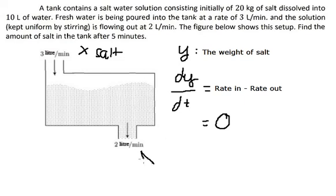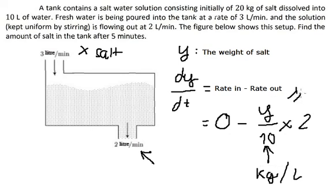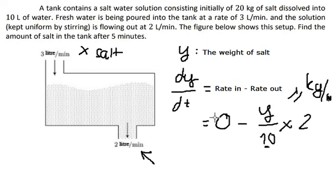For rate out, we take y divided by the total water, which is 10. The unit at this point is kilograms per liter. We then multiply by 2 liters per minute, giving a unit of kilograms per minute. Simplifying 2 over 10 gives us negative y over 5.